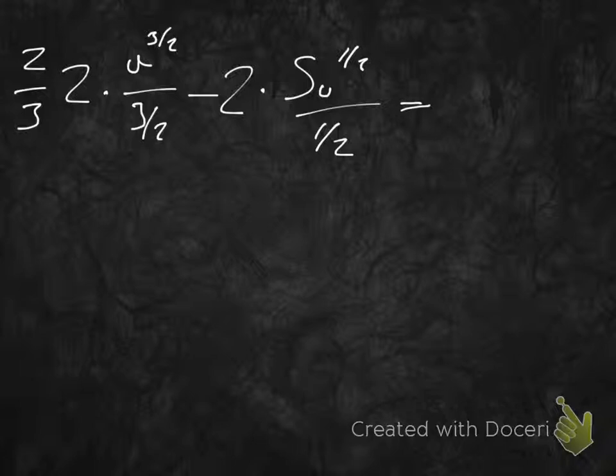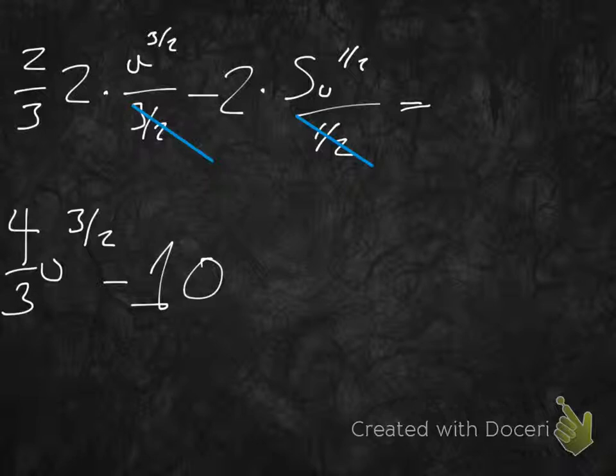Here's what we're going to end up with. We'll get 4 thirds u to the 3 halves minus 10u to the 1 half. I'm just doing some simple algebraic work here.